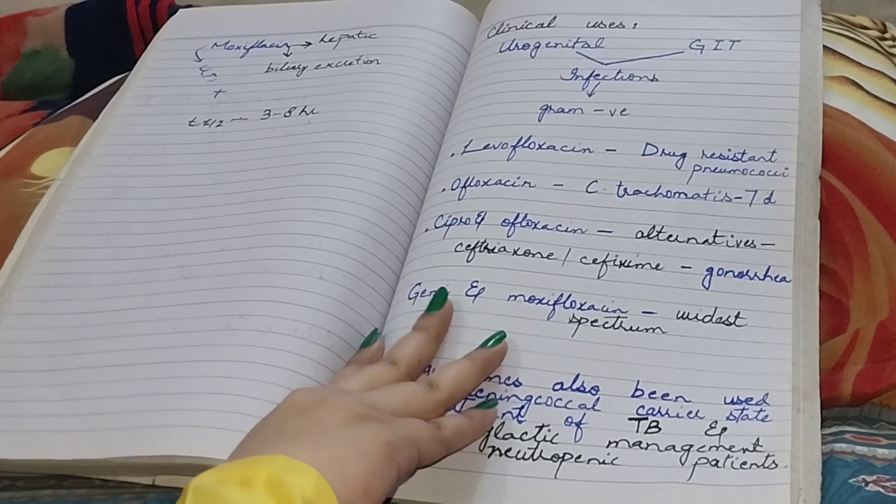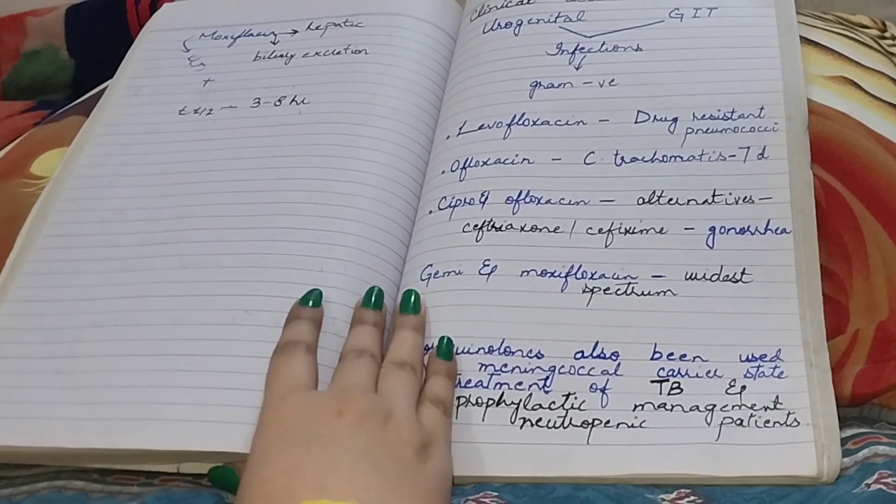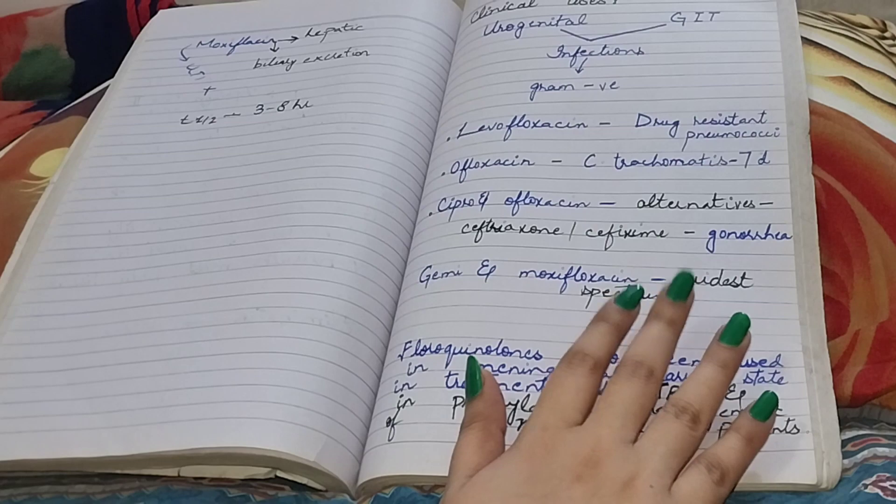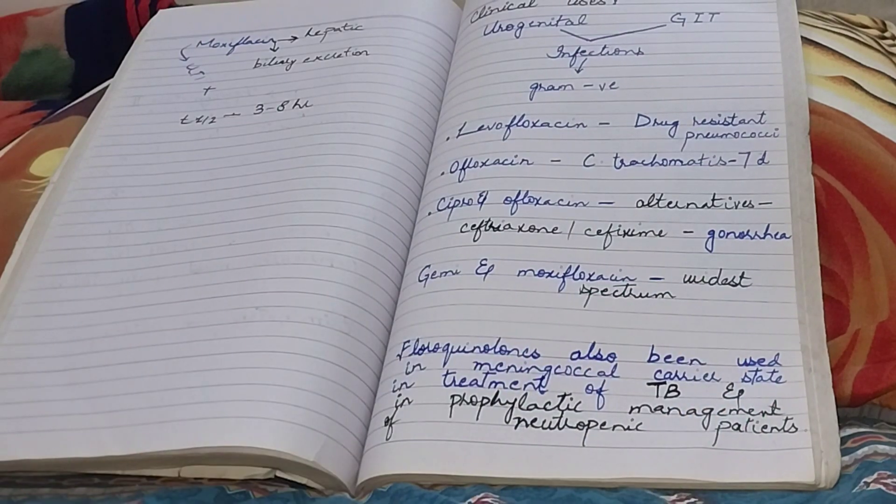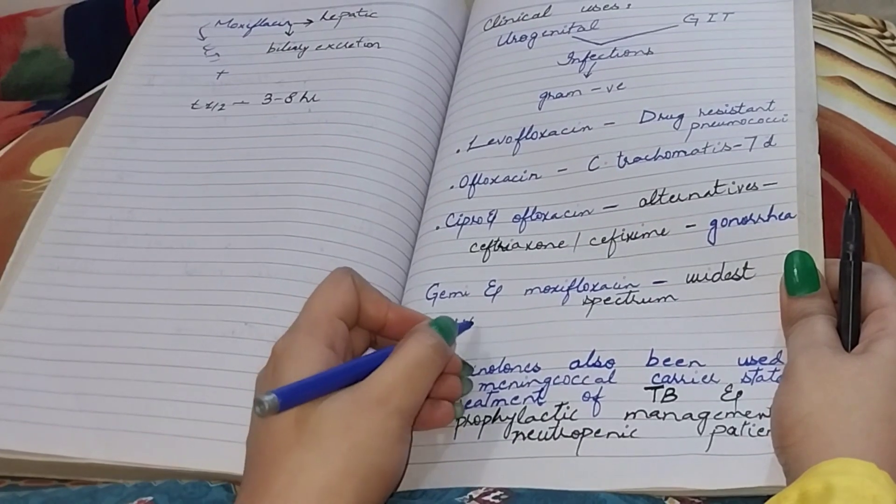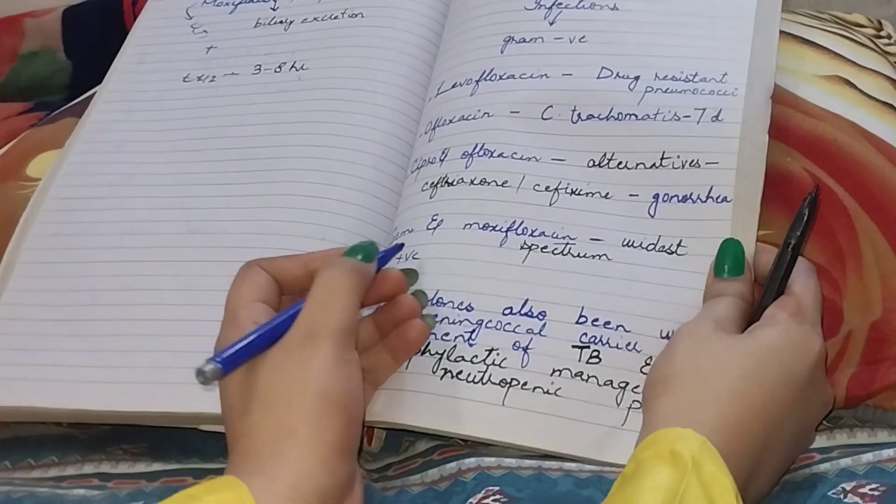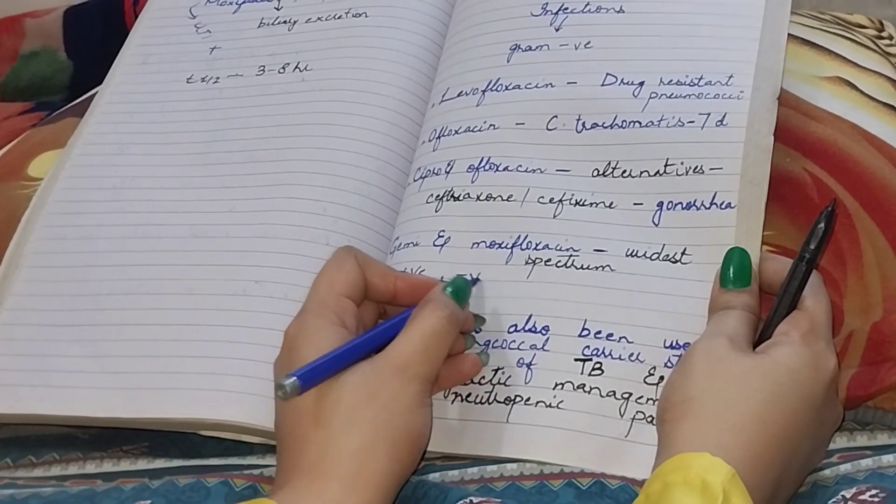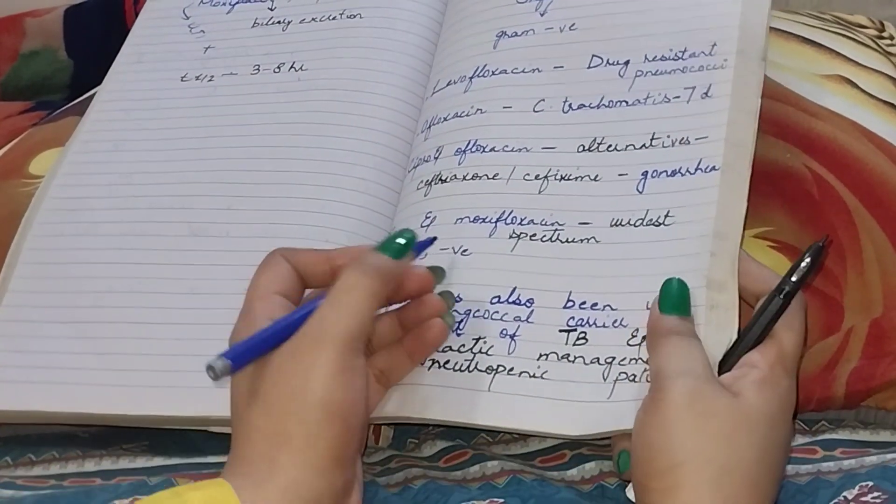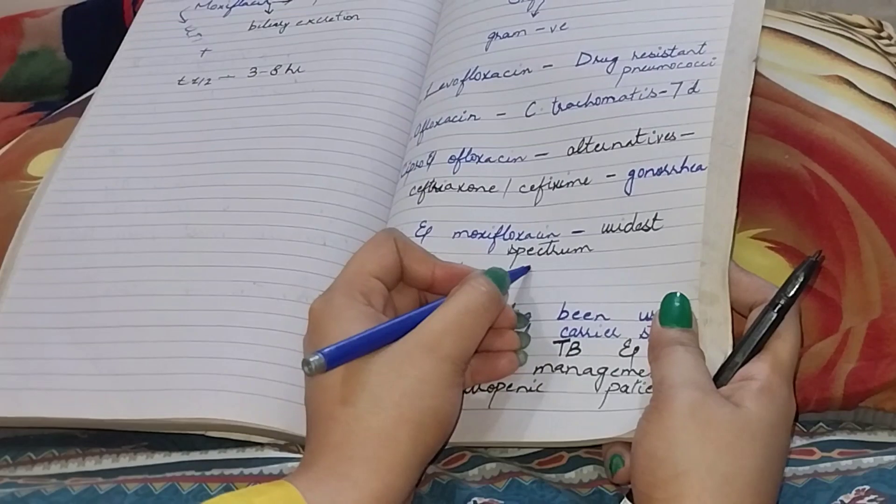And about gemi and moxifloxacin, as I told you before, they both have widest spectrum which includes both gram positive, gram negative, atypical pneumonia, and some anaerobes.